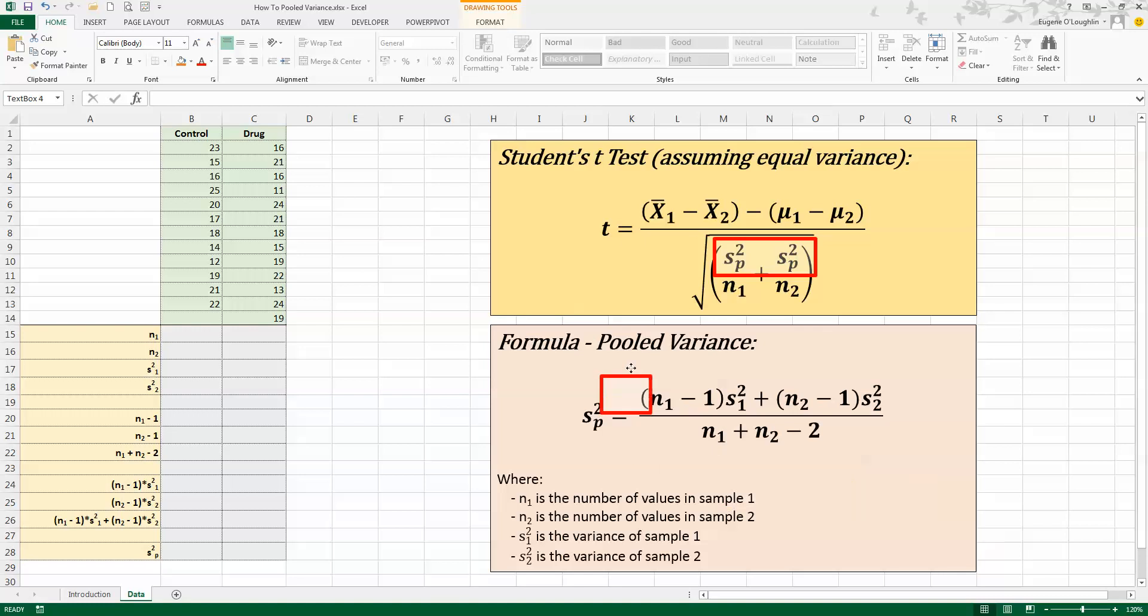And in that formula you can see that it looks quite complex but let's take a closer look. It's made up of six elements. N1 appears twice at the top and in the denominator. N2 is also at the top and underneath in the denominator. We've also got the actual variance of sample one and the actual variance of sample two. So N1 is the number of values in sample one, N2 is the number of values in sample two. S squared one is the variance of sample one and S squared two is the variance of sample two.